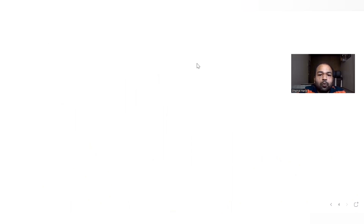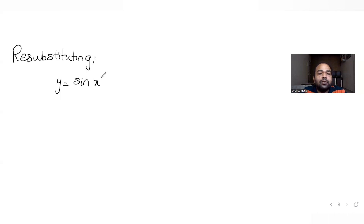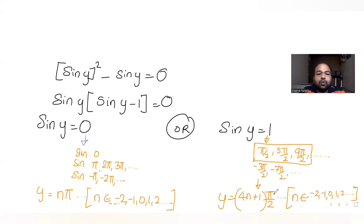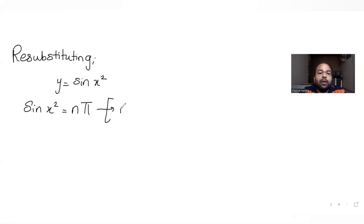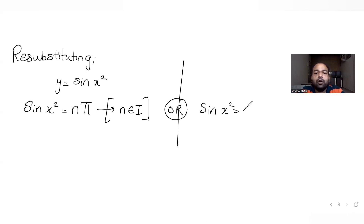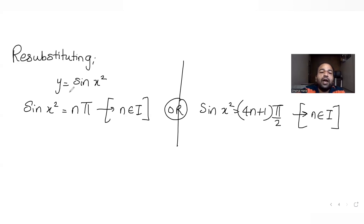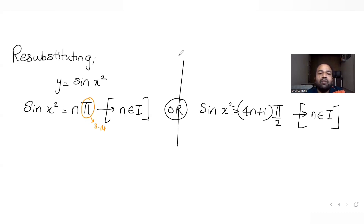Re-substituting y = sin(x²), we get two cases. Case 1: sin(x²) = nπ, n ∈ integers. Case 2: sin(x²) = (4n+1)π/2, n ∈ integers. Now we check which values of n are valid given that the range of sine is always between −1 and 1.